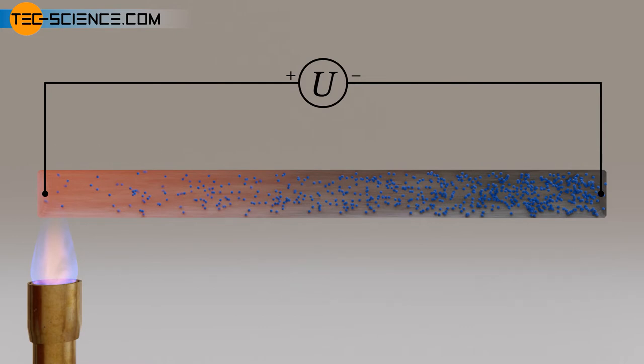At a given temperature gradient, the thermoelectric voltage is strongly dependent on the conductor material. In the case of materials whose free electrons can be set in motion relatively easily when heated, the thermoelectric voltage is greater because the electrons are more strongly spread.